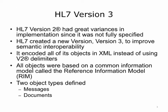HL7v3 was developed because of problems with HL7v2. HL7v2 had great variance in implementation since it was not fully specified. With version 3, HL7 tried to be much more precise to reduce variances between implementations. All V3 messages and documents were derived from a single information model to ensure a base consistency across the standard. This information model is called the Reference Information Model, or RIM. HL7 also encoded all V3 objects using XML, or Extended Markup Language, a popular encoding language for the web.